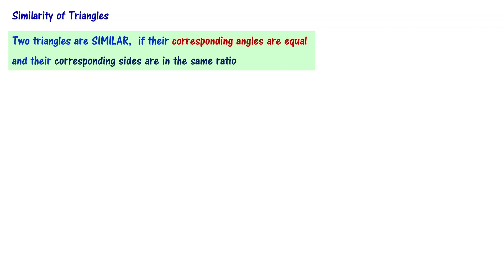Two triangles are said to be similar if their corresponding angles are equal and their corresponding sides are in the same ratio. Let us understand this statement now.